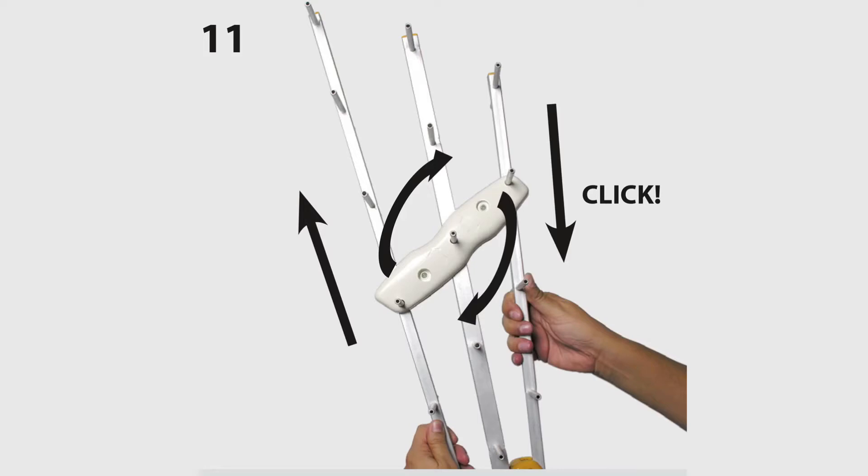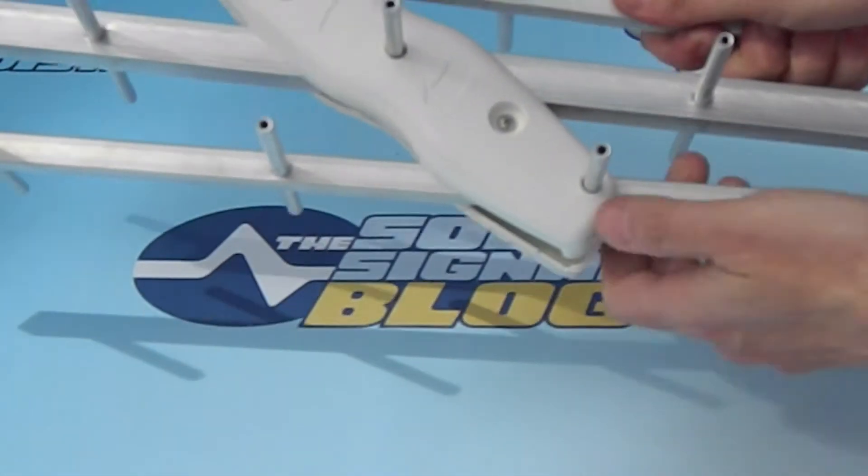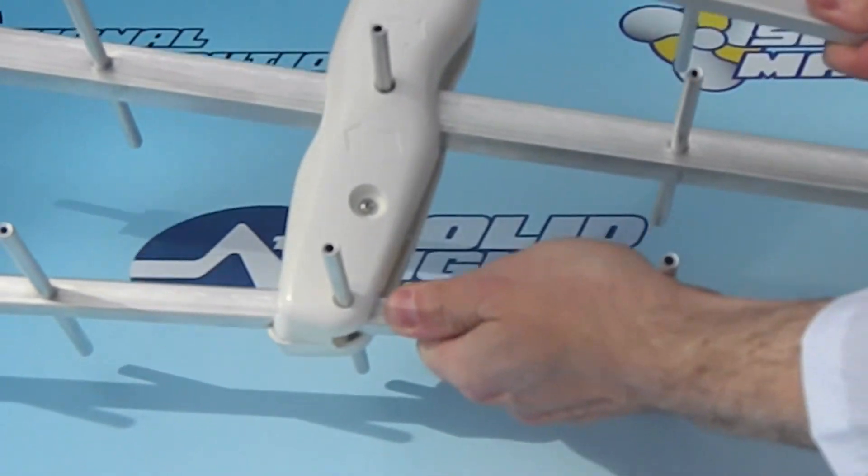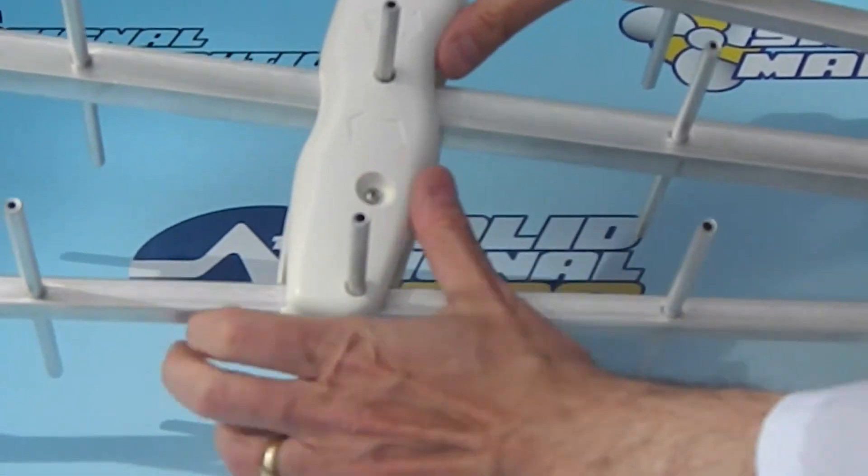Pull the top and bottom director in two different directions in order to make sure that that white piece straightens out. When it does, you're going to hear a little click and that's how you're going to know you've got it.